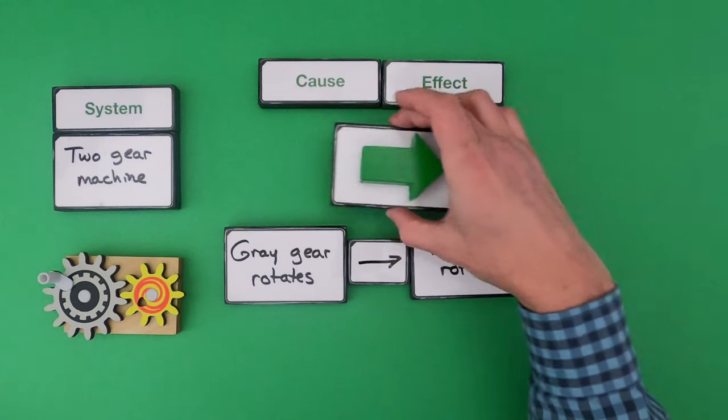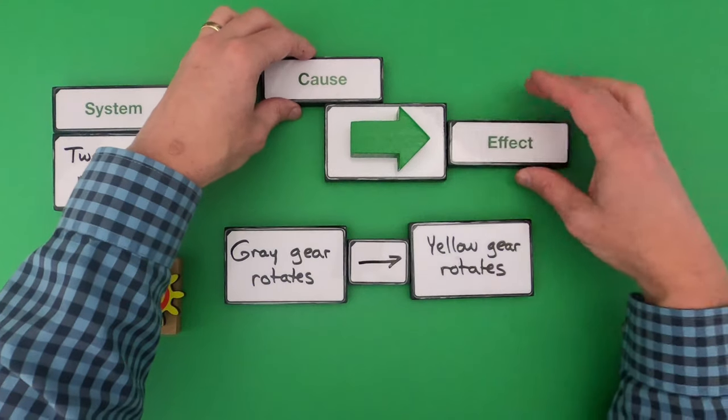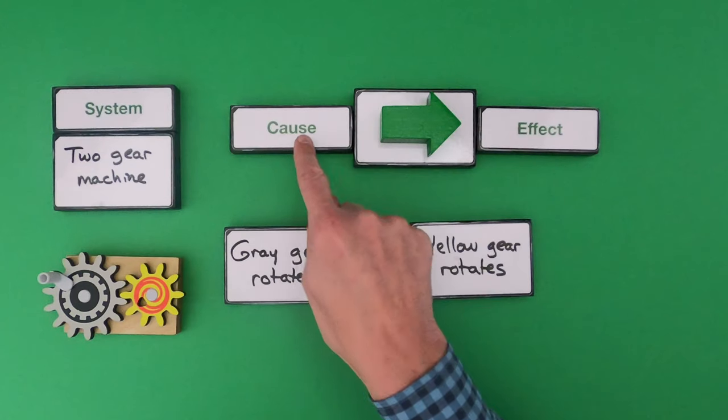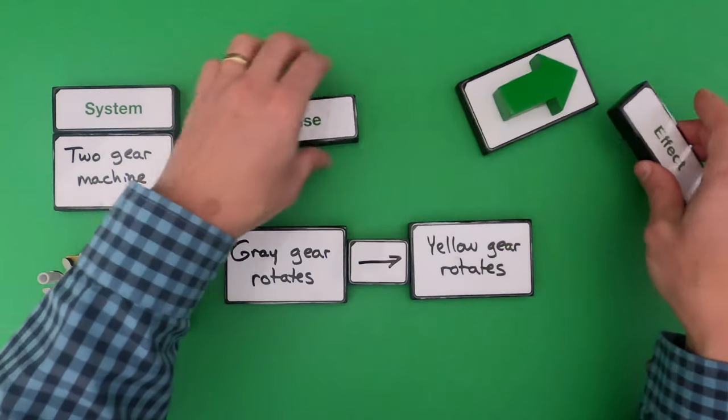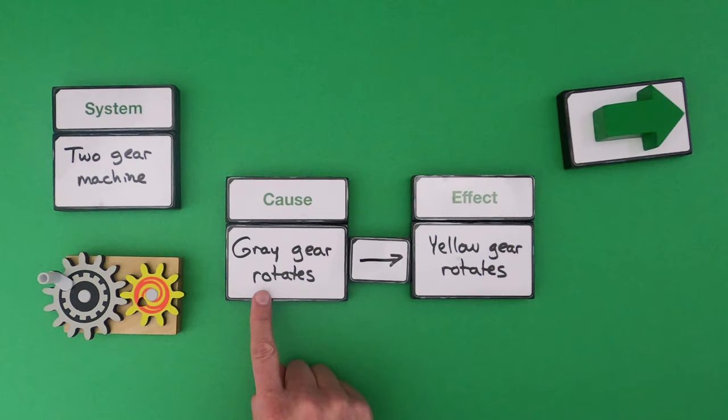So what does that green arrow represent? That green arrow represents the connection between the cause and the effect. So the cause leads to the effect. And so another way to label the events is like this. So we've got the cause of the gray gear rotating and the effect of the yellow gear rotating.